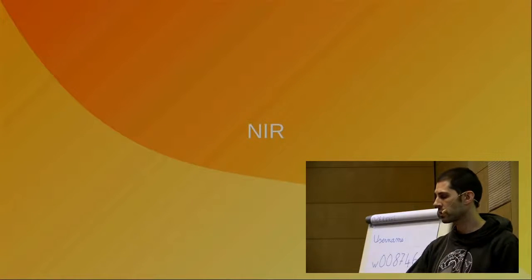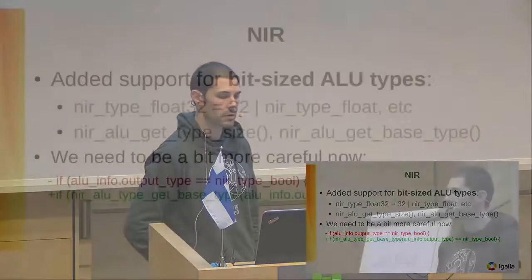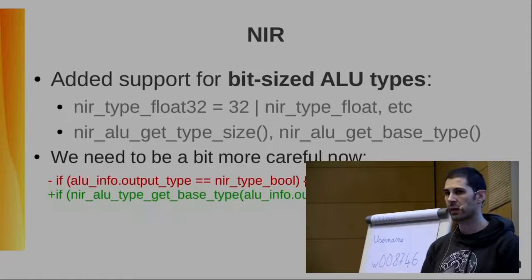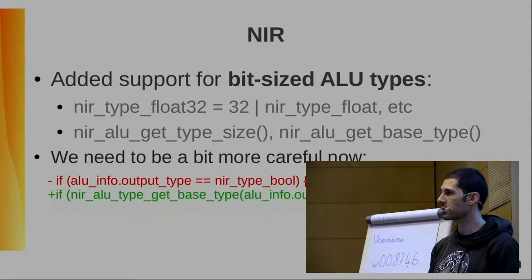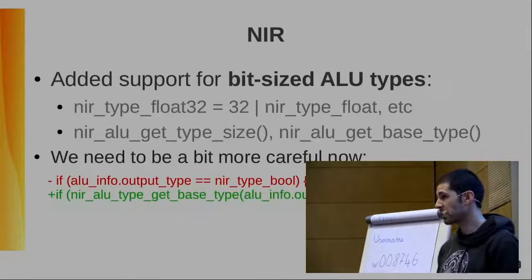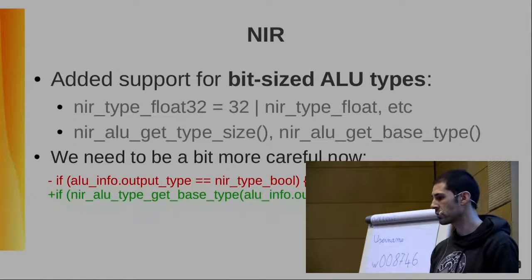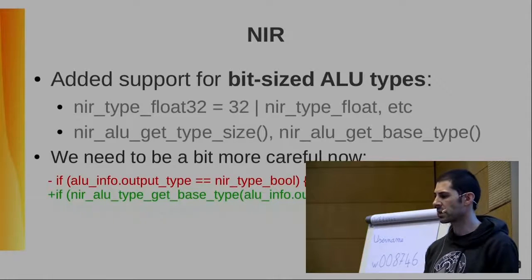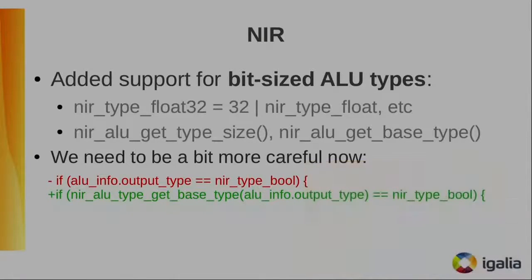Let's look at the changes that went into NIR. The big change was the addition of bit-sized ALU types. In the past we had things like nir_type_float; now we have nir_type_float32 and nir_type_float64 alongside the original base type. This means we need to be more careful when handling types in NIR or drivers that consume NIR code. When checking for specific types — like whether an opcode's output is a boolean — the right way is now to compare against the base type, since the opcode could have a bit-sized type instead.